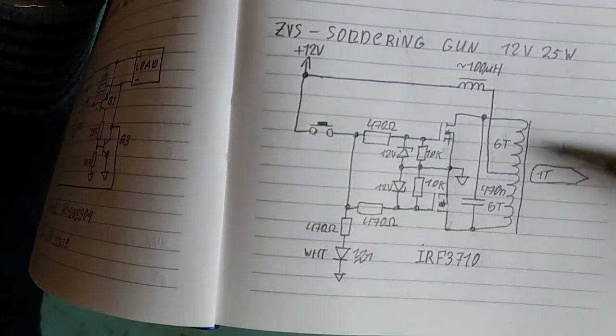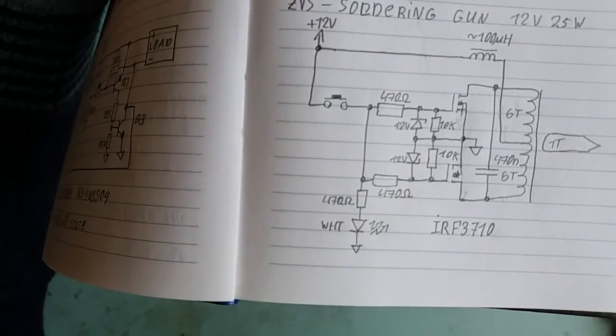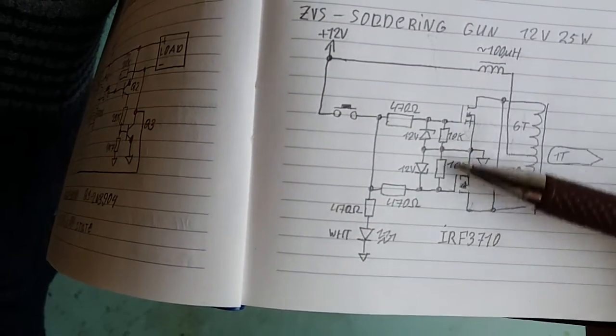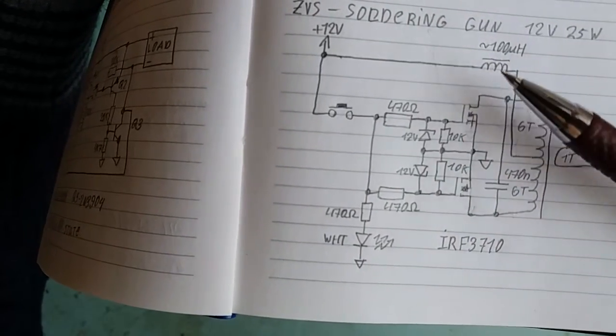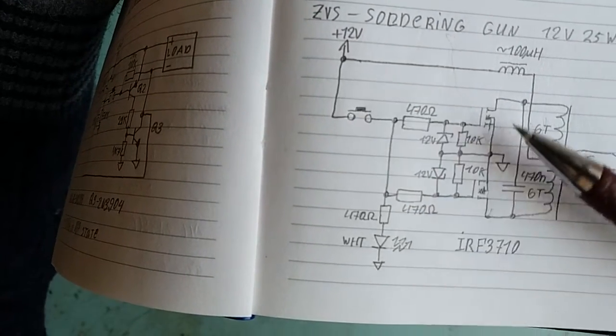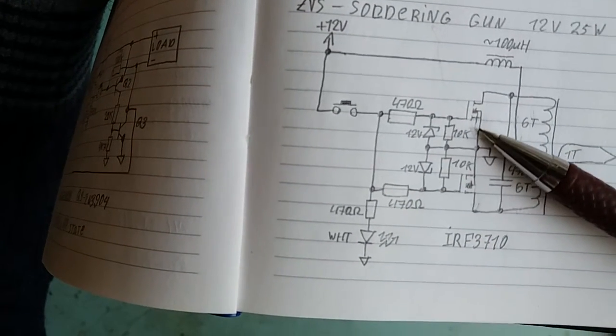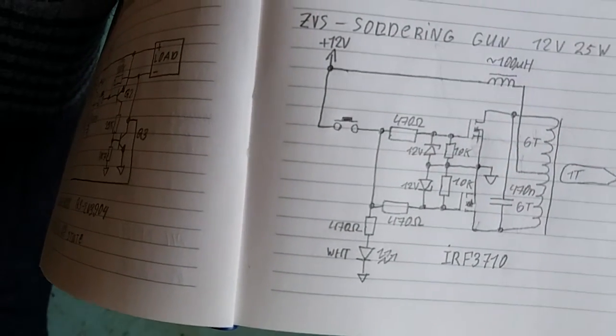Switches are IRF3710. You can see the pull-down resistors, and having those pull-down resistors makes sure that I can use the button here. When the button is open, the resistors discharge the gate, so the thing consumes zero current.